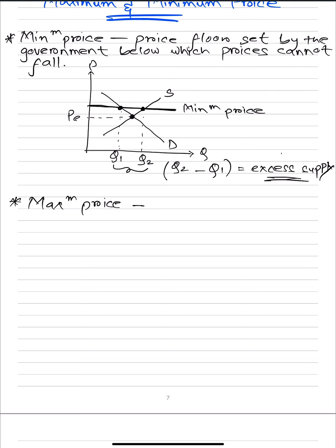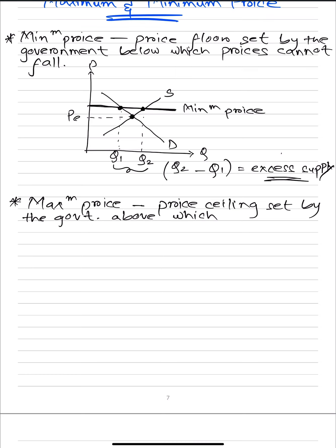Maximum price is basically the exact opposite of minimum price. It is a price ceiling set by the government above which prices cannot rise. Maximum prices are set when the government thinks the equilibrium price in the market is too high, so the government intervenes, sets the price lower, and imposes it as a maximum — the price cannot go above it.